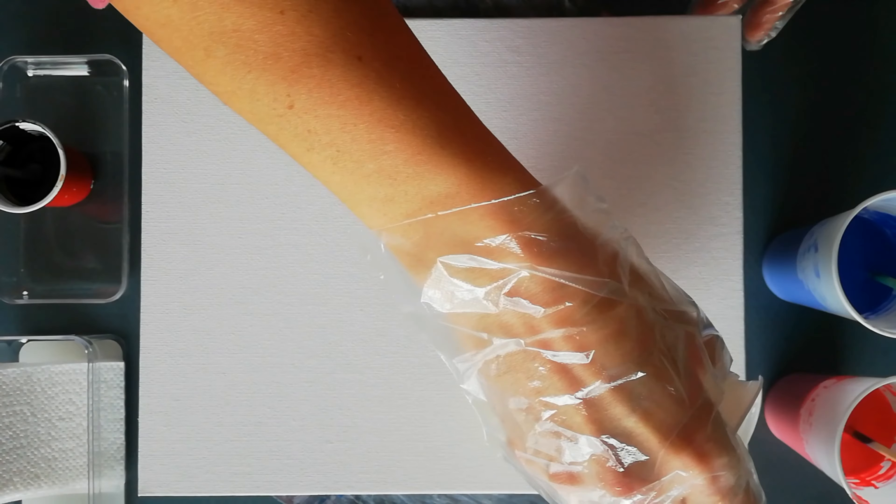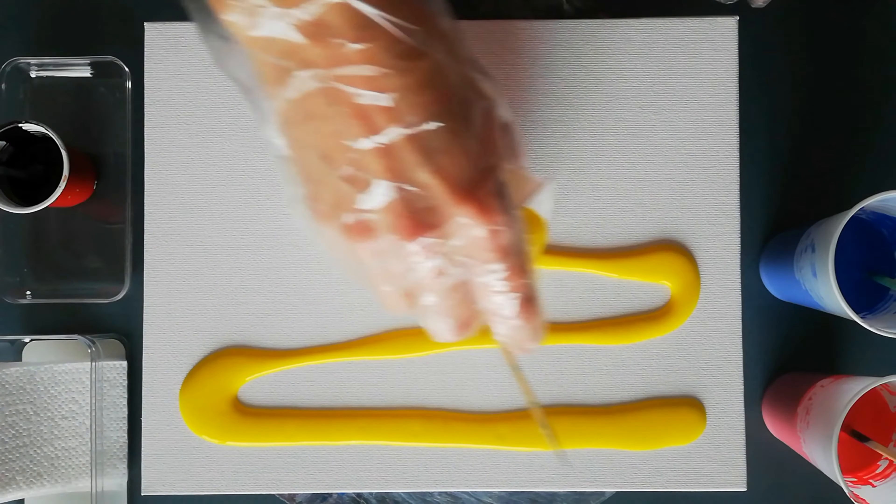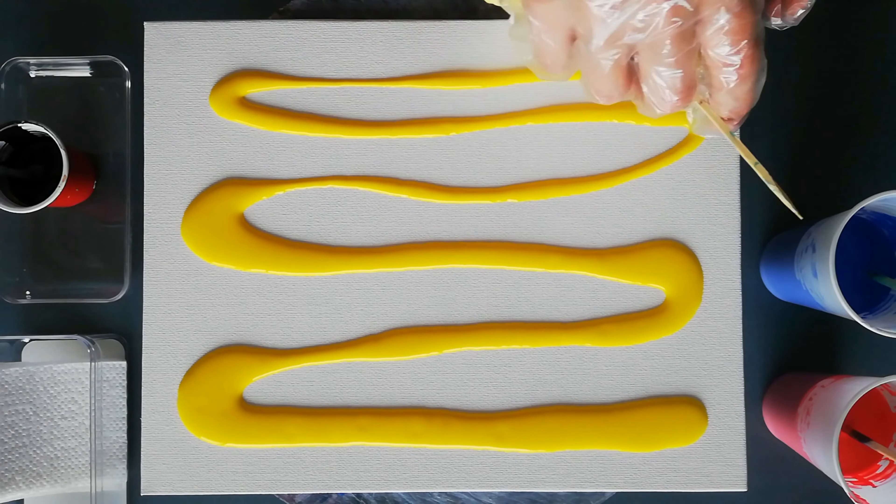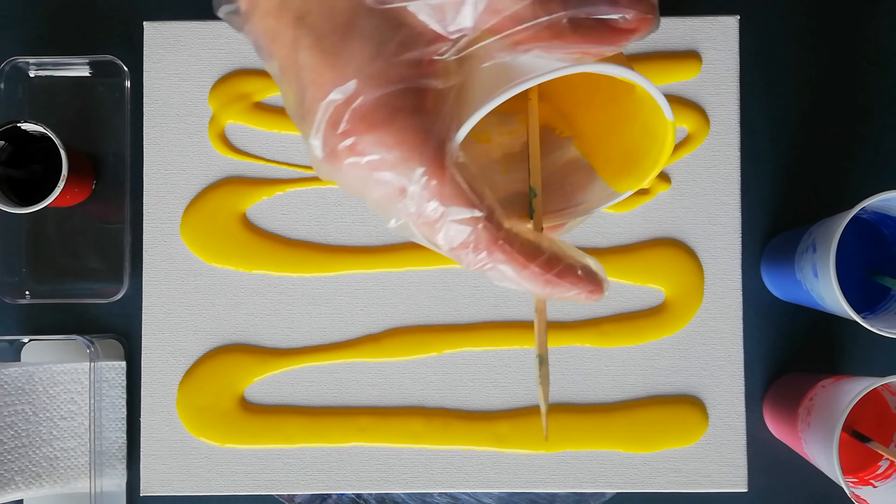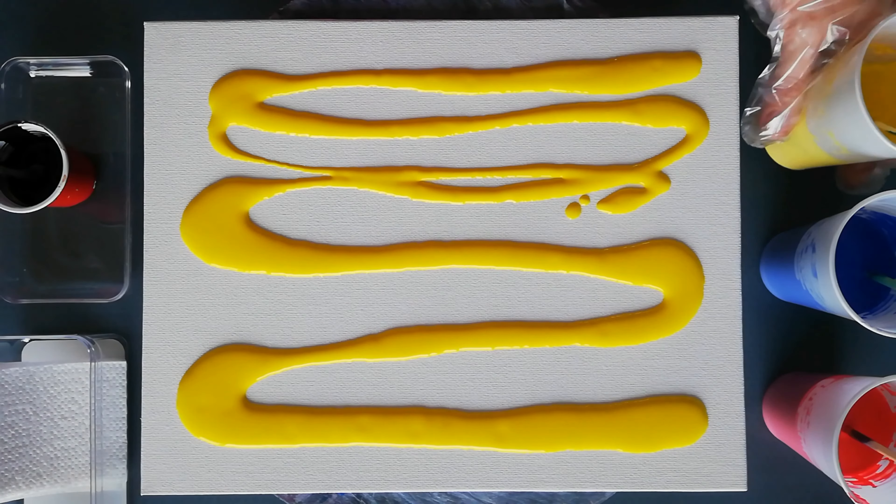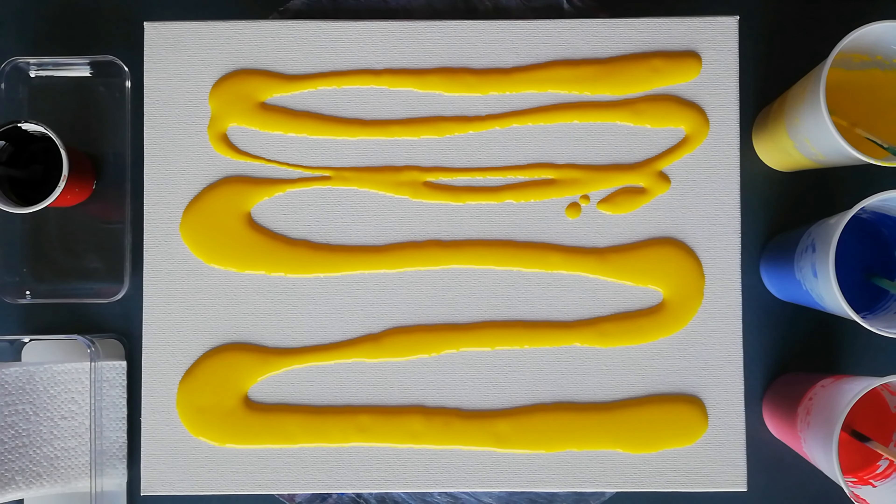And I'm gonna pour my yellow first, because I want my yellow to be the one to create more cells. And how am I going to get it to do that is by adding some silicone to just the yellow.